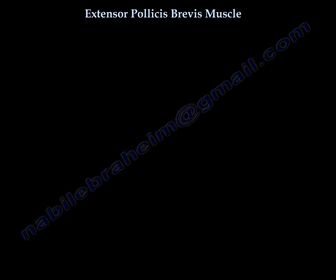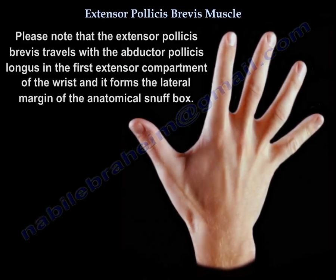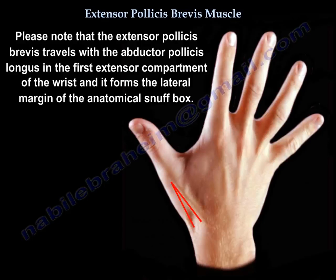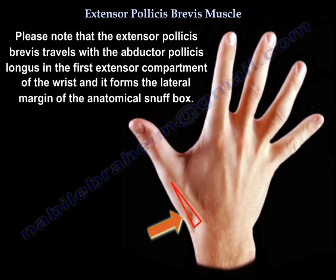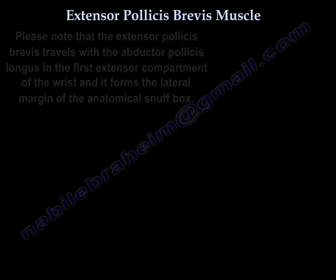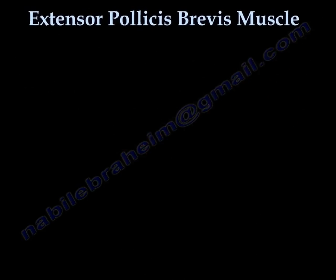Please note that the extensor pollicis brevis travels with the abductor pollicis longus in the first extensor compartment of the wrist, and it forms the lateral margin of the anatomical snuff box. I hope you like that video.